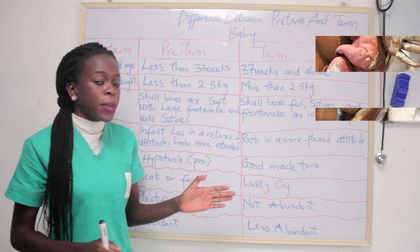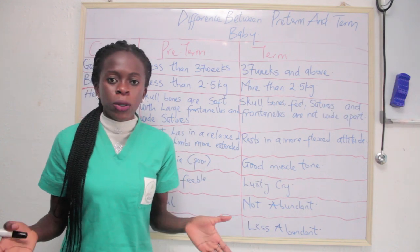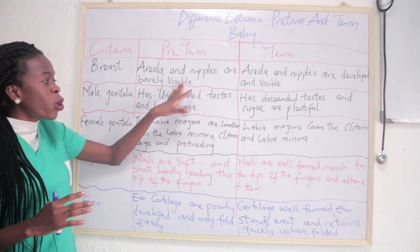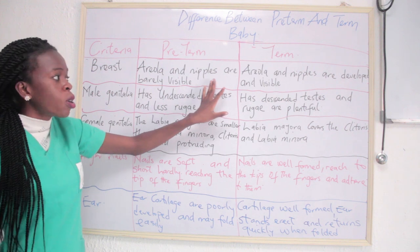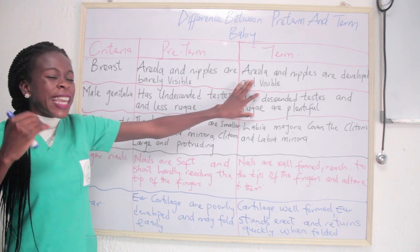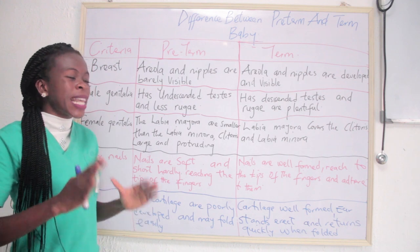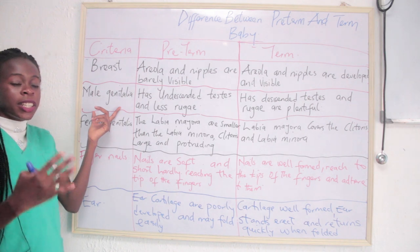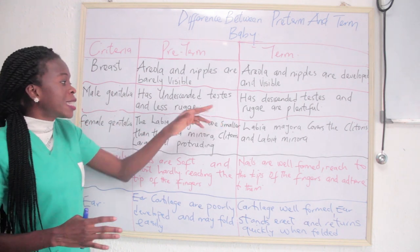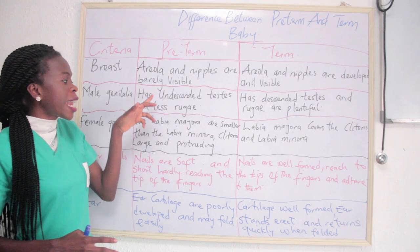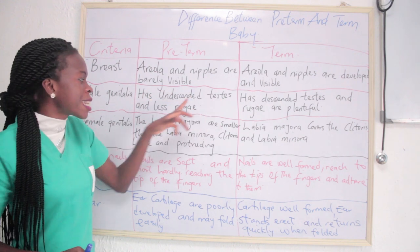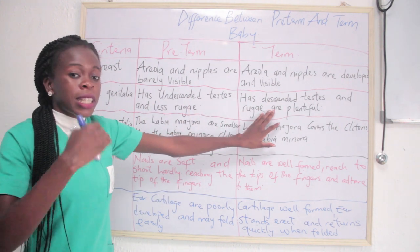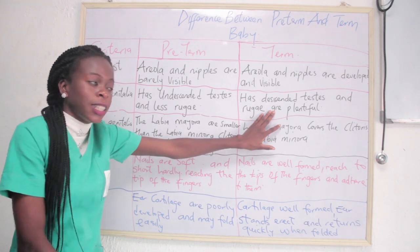In terms of the breast, in pre-term babies the areola and nipples are barely visible, but in term babies the areola and nipples are developed and visible. For male genitalia, in pre-term babies the testes are undescended and the rugae are less prominent, but in term babies the testes have descended and the rugae are plentiful.